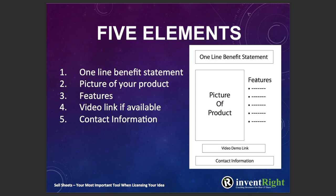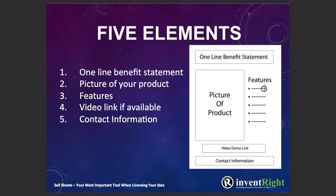So what are the elements of a sell sheet? You have a one-line benefit statement. Then you have a picture or multiple pictures of a product. And then — we purposely labeled it as 'features' here — no, you don't want just a bunch of features. You could have a few, like 'stainless steel,' but that's not really telling you the benefit of the product. You're not going to be able to cram all your benefits into the one-line statement, so you can put extra benefits down here and maybe a feature or two, but do not list just an endless list of features.